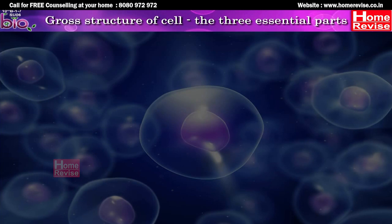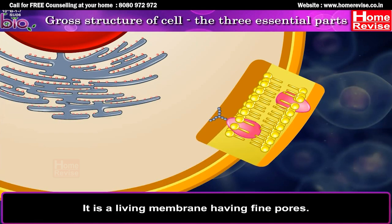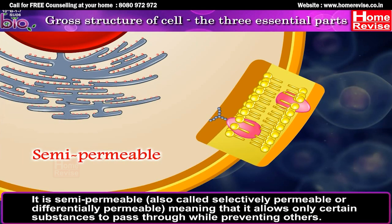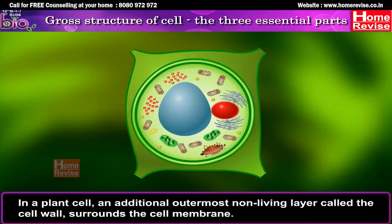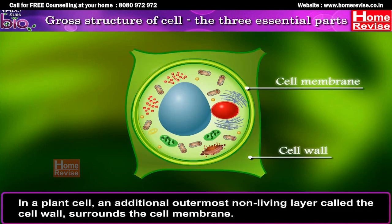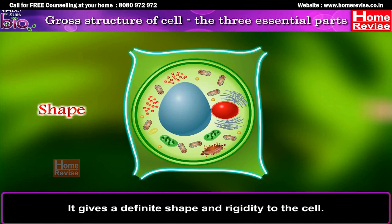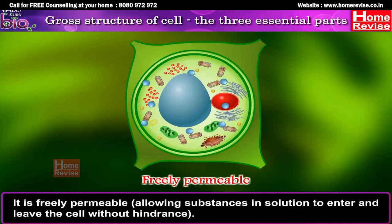Draw the structure of a cell showing the three essential parts. One: cell membrane or plasma membrane, which encircles the cell. It is a living membrane with fine pores. It is semi-permeable, also called selectively permeable or differentially permeable, meaning it allows only certain substances to pass through while preventing others. In a plant cell, an additional outermost non-living layer called the cell wall surrounds the cell membrane. The cell wall is mostly made up of cellulose. It gives a definite shape and rigidity to the cell and is freely permeable, allowing substances in solution to enter and leave the cell without hindrance.